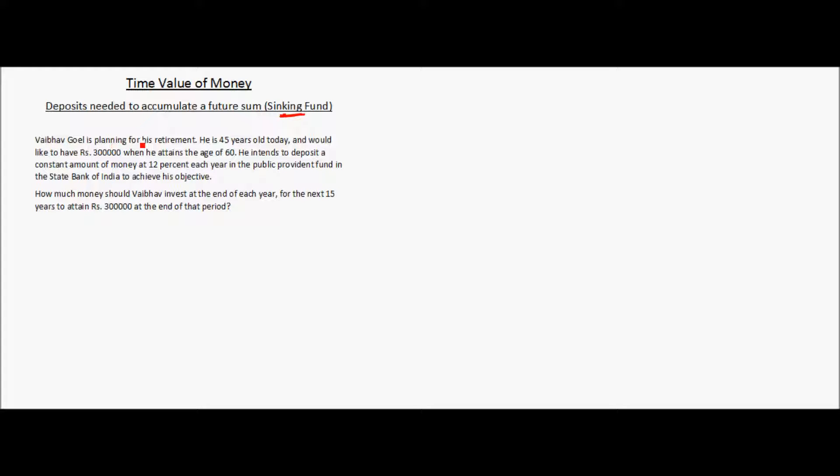Vabhav Goel is planning for his retirement. He is 45 years old today and would like to have rupees 300,000 or 3 lakhs when he attains the age of 60.